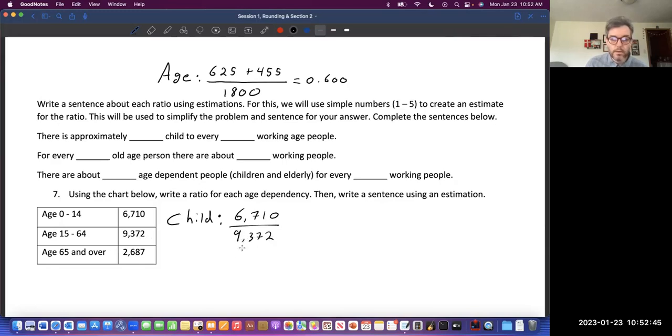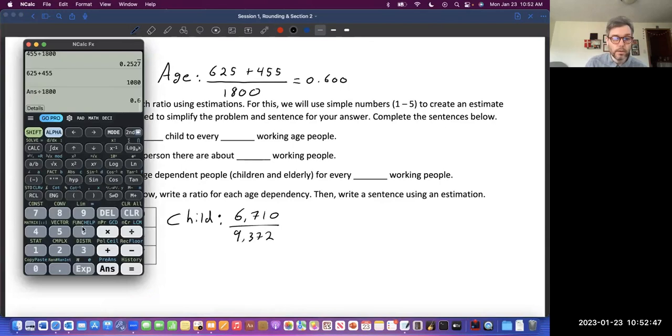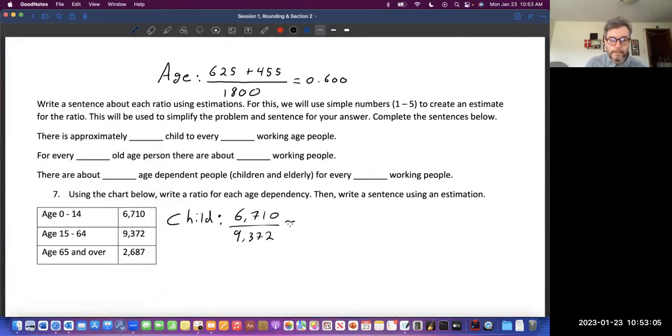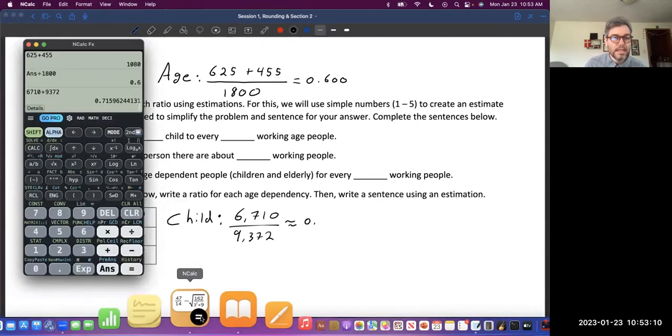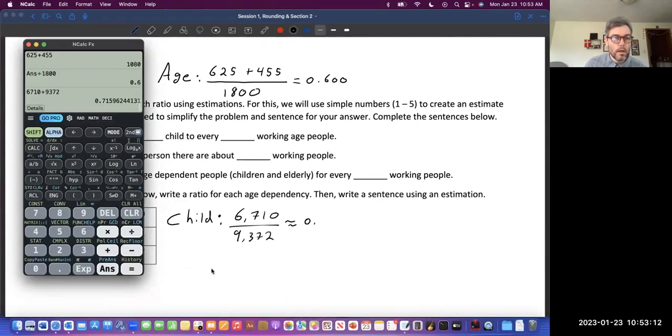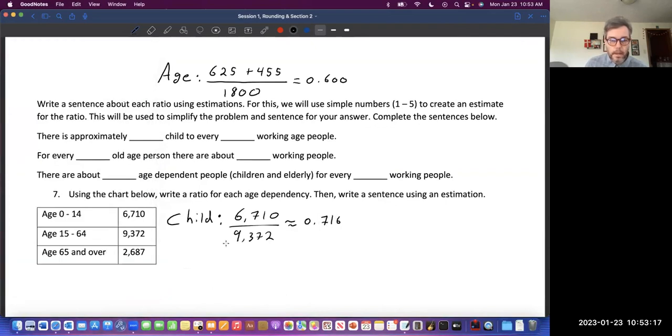Here we are going to write the ratio for each dependency, and then use a sentence using an estimation. 6,710 over the working age, 9,372. If we can, we would like to reduce. Does this reduce? Not really. We can use an estimation. It's approximately 0.716.